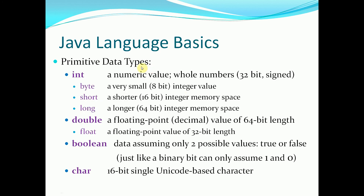Now we come to the Java language basics, and with that we have what are known as the primitive data types. For numerical values we have integers, or int — a whole number, 32-bit signed integer. We'll get into a lot of this as we start to use them in more detail. There are also different types of integer or numeric values: we have a byte, which is only an 8-bit representation; a short, which is a 16-bit representation; and a long, which is a 64-bit representation.